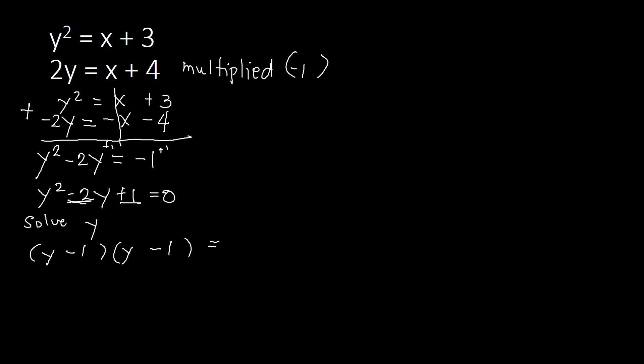So this factors as (y minus 1)(y minus 1) equal to 0. Solving for y, we set y minus 1 equal to 0 and y minus 1 equal to 0, giving y equals 1 in both cases. Our y value is 1 with multiplicity 2, meaning the y value is repeated — y equals 1.